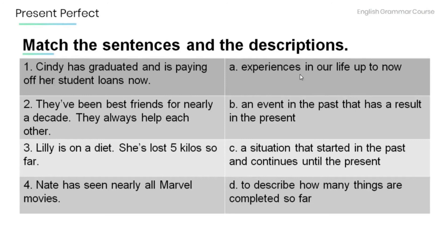And now, time for you to practice on your own. Match the sentences below with the descriptions. 1. Cindy has graduated and is paying off her student loans now. 2. They've been best friends for nearly a decade — they always help each other. 3. Lily is on a diet — she's lost 5 kilos so far. 4. Nate has seen nearly all Marvel movies. A. Experiences in our life up to now. B. An event in the past that has a result in the present. C. A situation that started in the past and continues until the present. D. To describe how many things are completed so far.